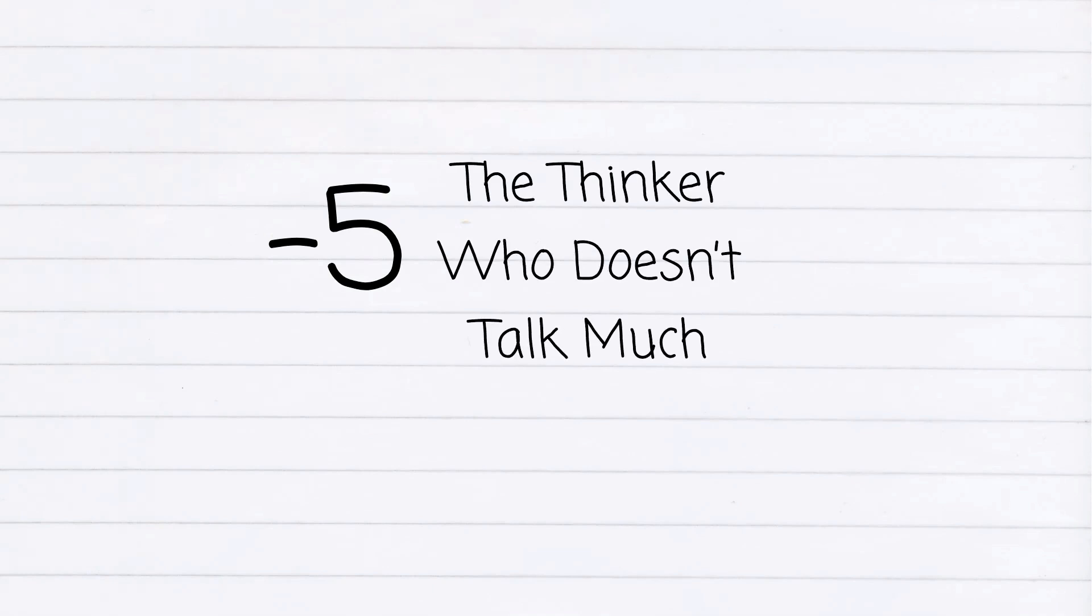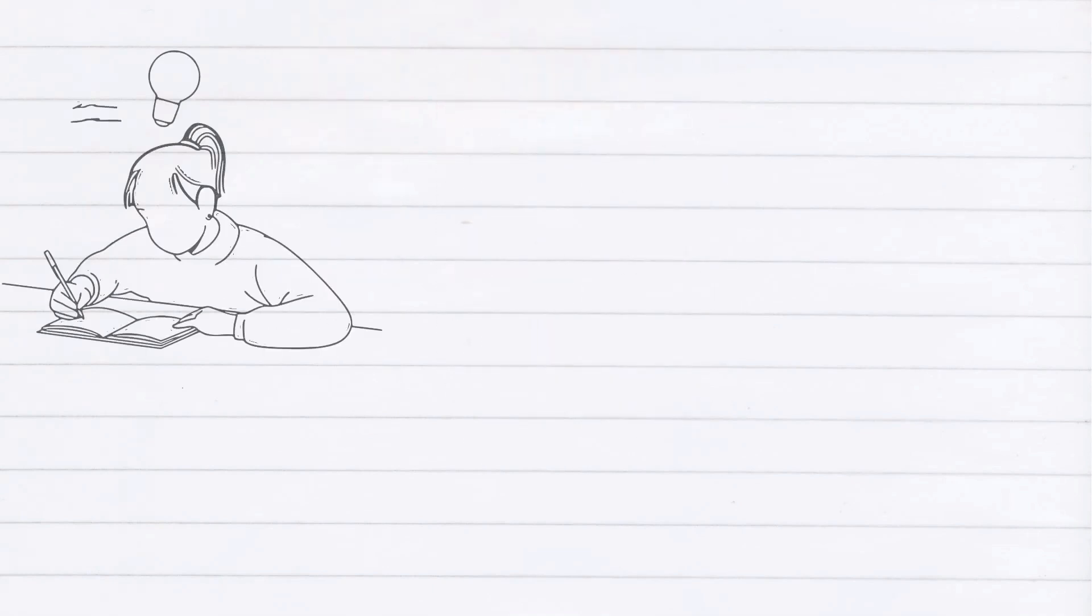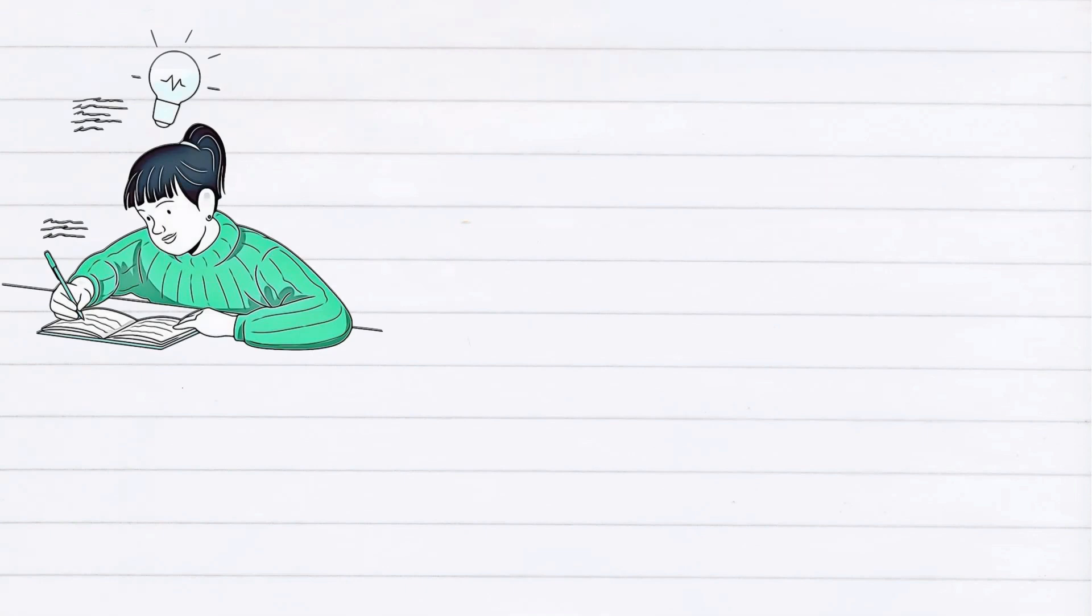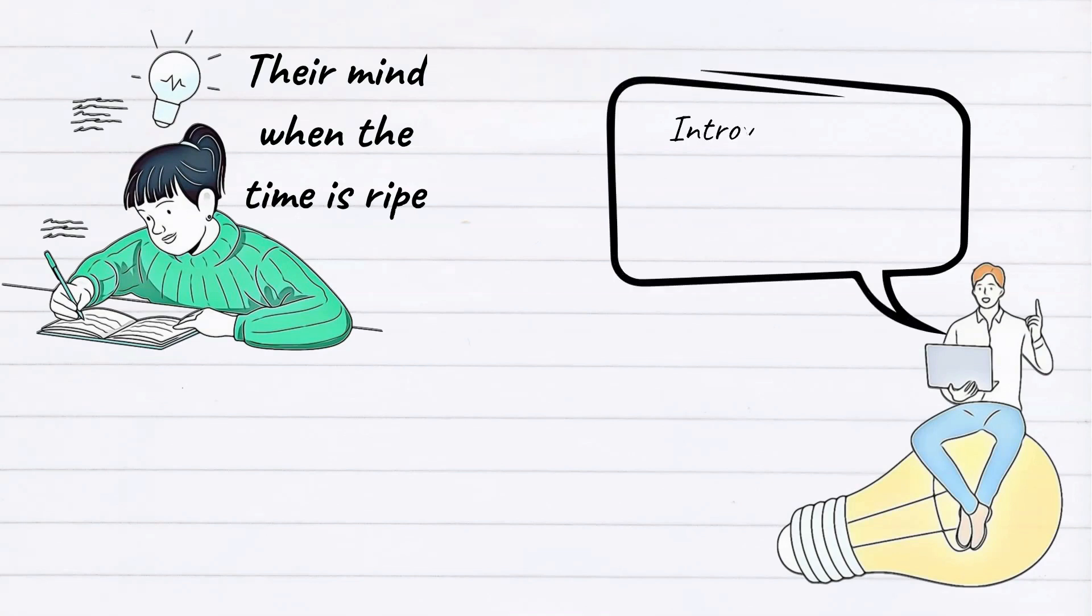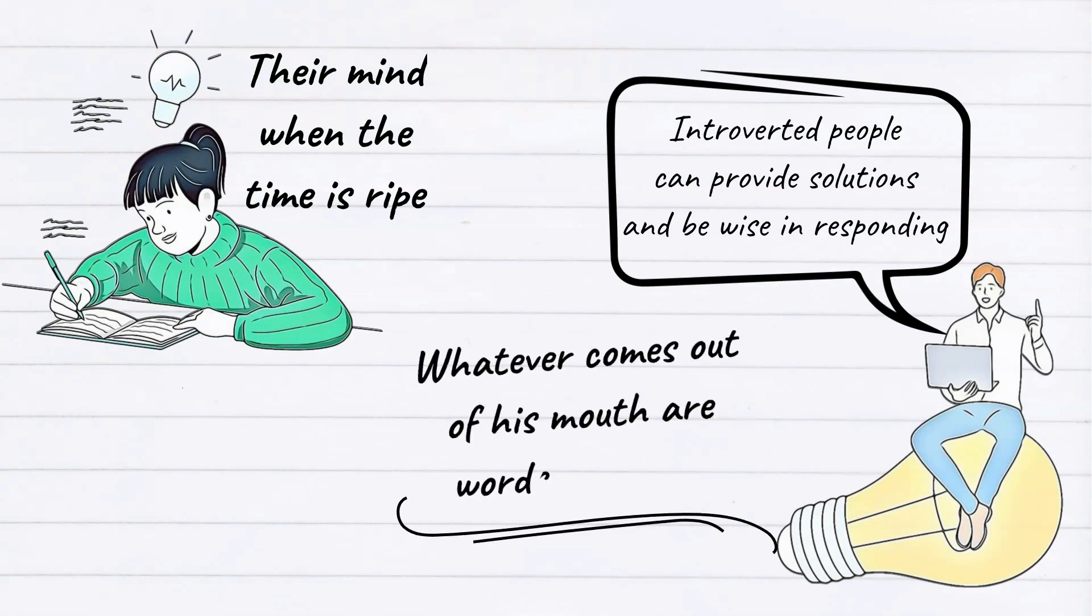Five: the thinker who doesn't talk much. As you know, introverts aren't talkative. They're the quiet type and will only deliver what's in their mind when the time is ripe. So behind their silent nature, they often do several scenarios to think of every solution they currently have. When asked about something, introverted people can provide solutions and be wise in responding. Whatever comes out of their mouth are words of wisdom.